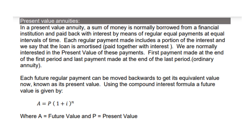In a present value annuity, a sum of money is normally borrowed from a financial institution and paid back with interest by means of regular equal payments at equal intervals of time. Each regular payment made includes a portion of the interest, and we say that the loan is amortized, paid together with interest. We are normally interested in the present value of these payments. First payment made at the end of the first period, and the last payment made at the end of the last period, that is ordinary annuities.